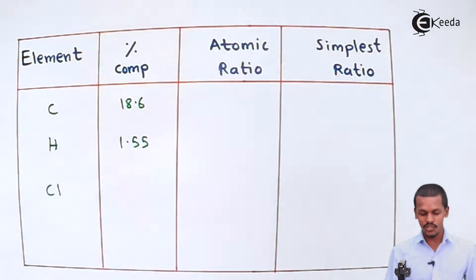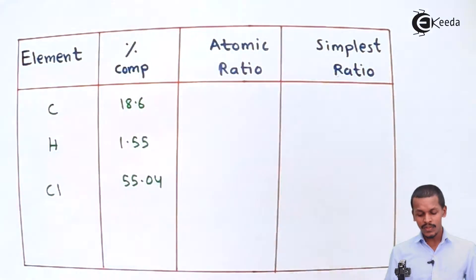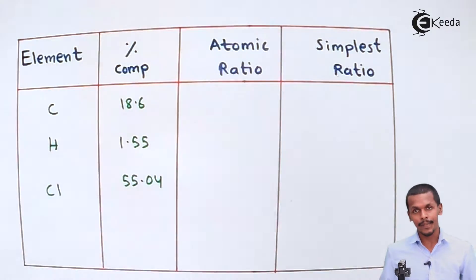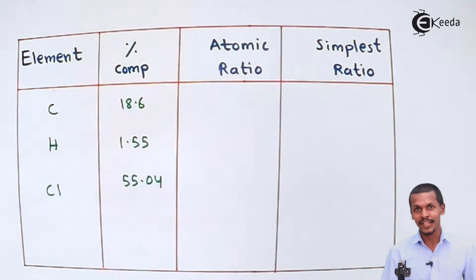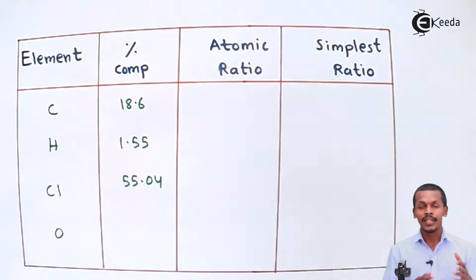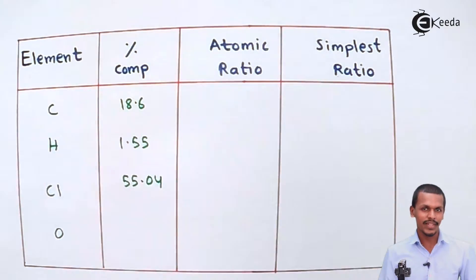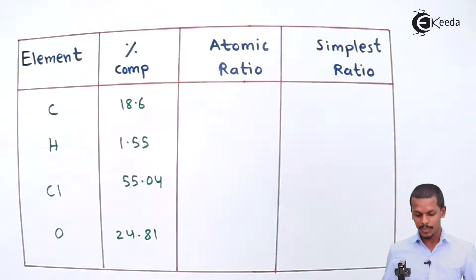For chlorine, the percentage is 55.04. Summing up 18.6, 1.55, and 55.04 does not give 100%, so the remaining part is oxygen. Therefore, oxygen is also present in this compound. Subtracting the sum from 100, we get 24.81% oxygen in the organic compound.